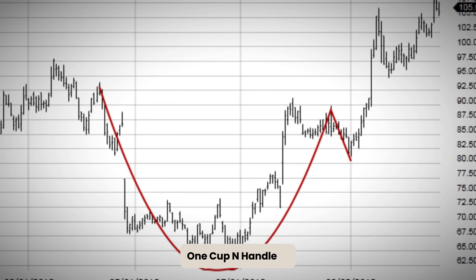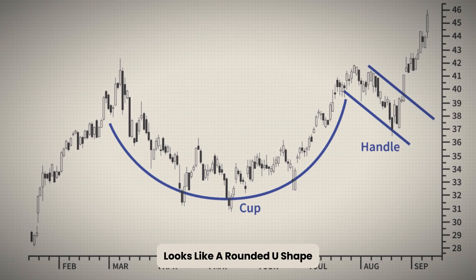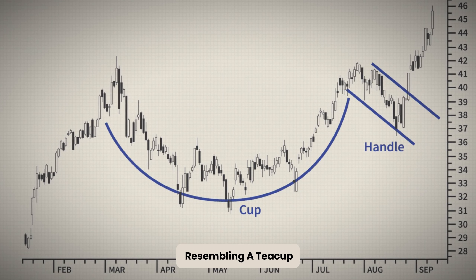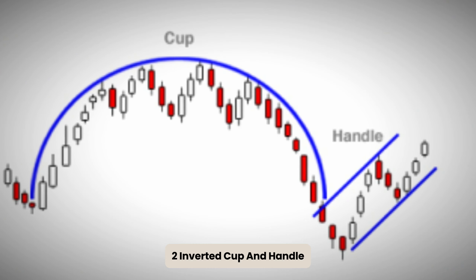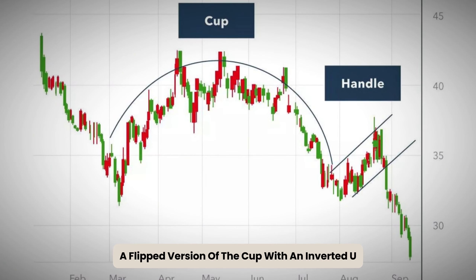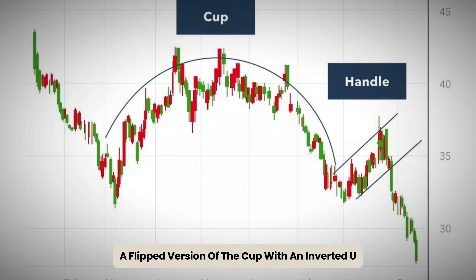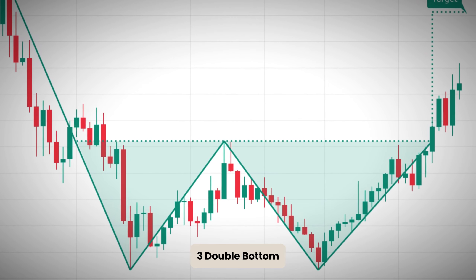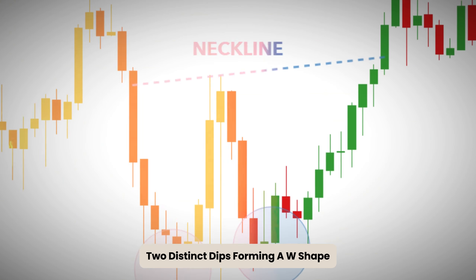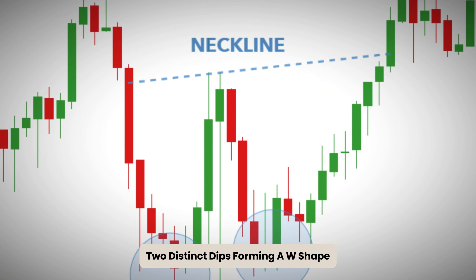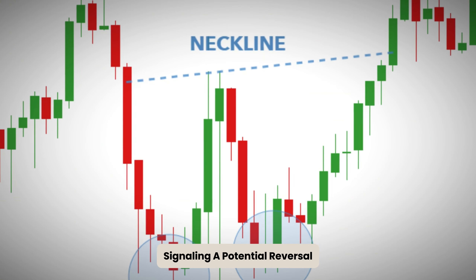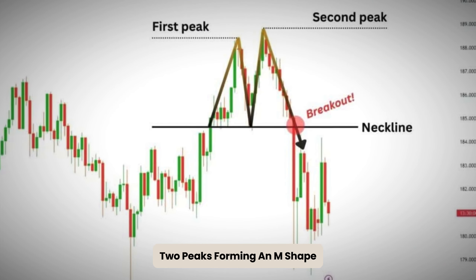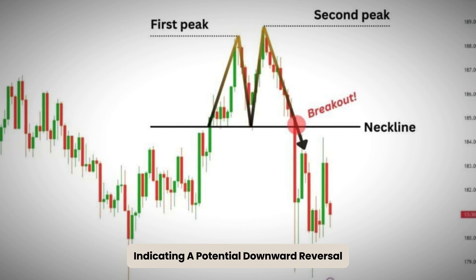1. Cup and Handle: Looks like a rounded U-shape followed by a small downward drift resembling a teacup. 2. Inverted Cup and Handle: A flipped version of the cup with an inverted U followed by a small upward drift. 3. Double Bottom: Two distinct dips forming a W-shape, signaling a potential reversal. 4. Double Top: Two peaks forming an M-shape, indicating a potential downward reversal.